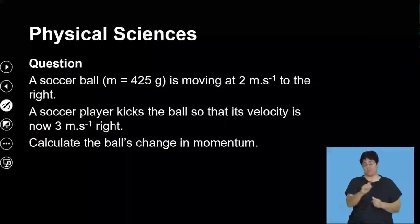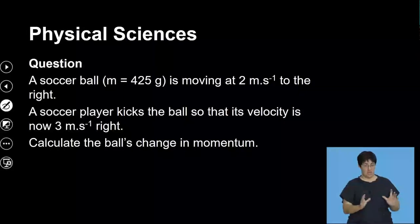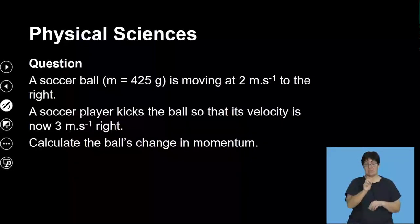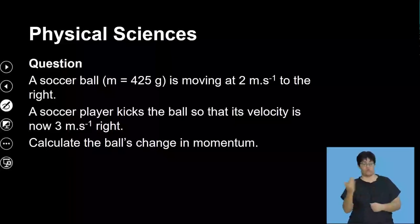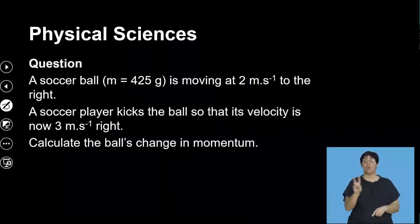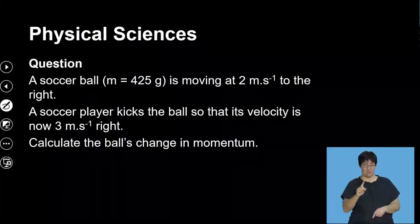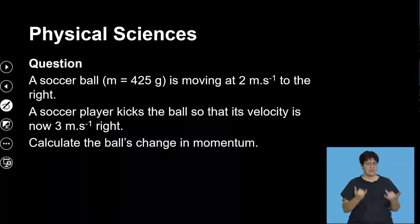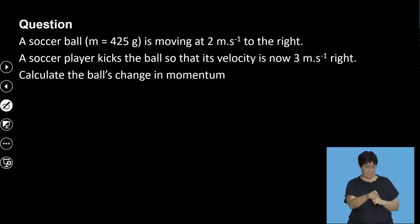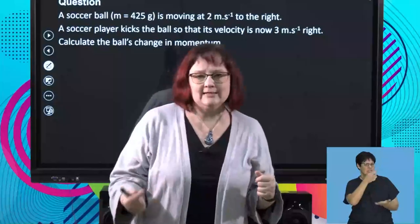So what we have is this. A soccer ball with a mass of 425 grams — that's the average mass of a soccer ball — is moving at two meters per second to the right. A soccer player kicks the ball so that its velocity is now three meters per second to the right. They ask you to calculate the ball's change in momentum. What I suggest: draw a diagram.